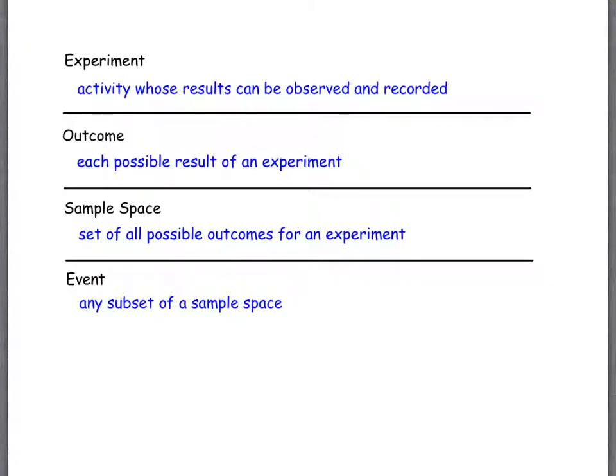So to start with, 9.1, we're going to talk about how probabilities are determined. First of all, when we talk about an experiment here, we don't mean that it has to be like a science experiment. An experiment is simply an activity where we can see what happens, where the results can be observed and recorded.